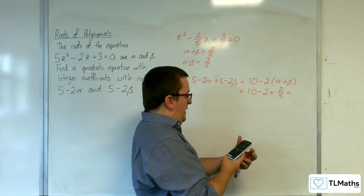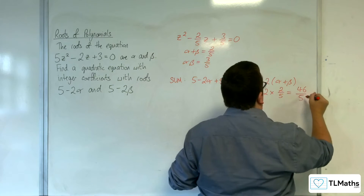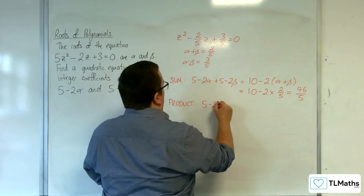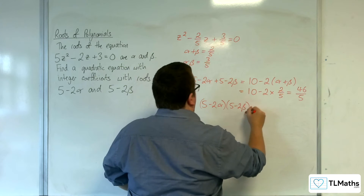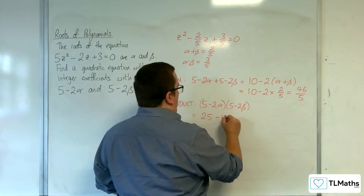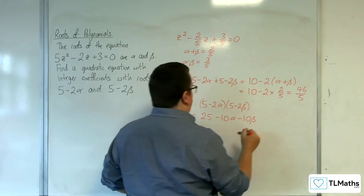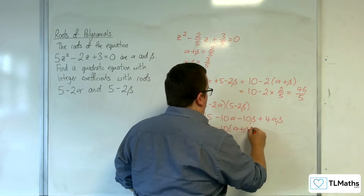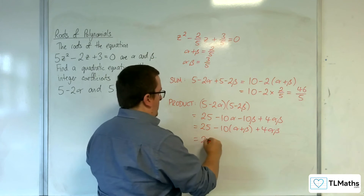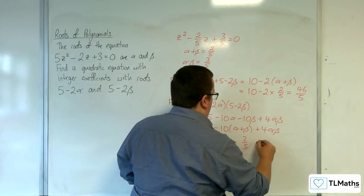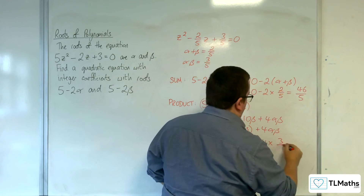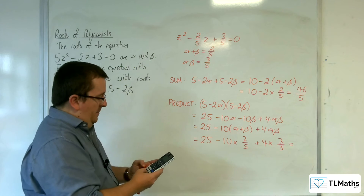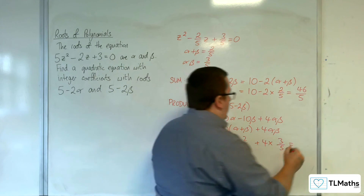So 10 take away 2 times 2 fifths is 46 fifths. That's the sum of my roots. Then I need to look at the product. So 5 take away 2 alpha times 5 take away 2 beta equals 25 take away 10 alpha take away 10 beta plus 4 alpha beta — that's 25 take away 10 lots of alpha plus beta plus 4 alpha beta. Alpha plus beta was 2 fifths and alpha beta was 3 fifths. So 25 take away 10 times 2 fifths plus 4 times 3 fifths equals 117 over 5.